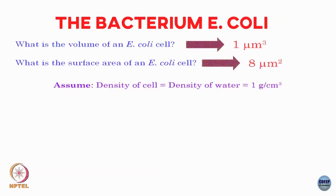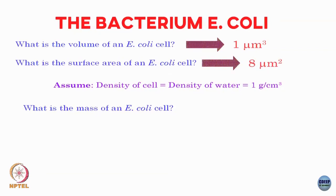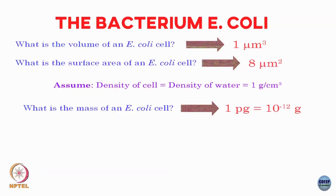Let me assume the density of this cell is the same as the density of water — not really true, it is slightly higher, but water has a nice number of 1 gram per cc. Given a volume of 1 micron cubed and density of 1 gram per cc, the mass of an E. coli cell comes out to 1 picogram — 10 to the power of minus 12 grams.